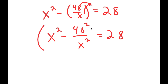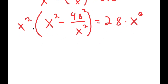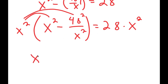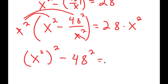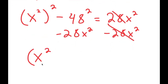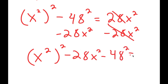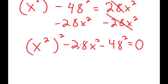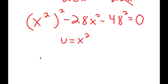Now I'm going to multiply both sides by x squared. Distributing on the left side: x squared times x squared is x to the fourth, minus 48 squared over x squared times x squared — these cancel — leaving 48 squared. This equals 28x squared. Subtracting 28x squared from both sides gives x to the fourth minus 28x squared minus 48 squared equals 0. I'll set u equal to x squared, so I get u squared minus 28u minus 48 squared equals 0.